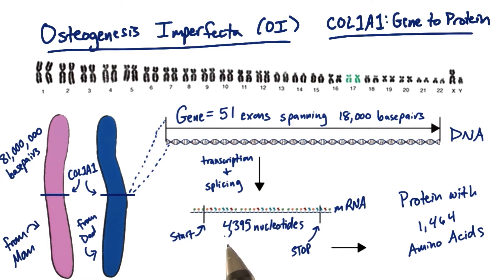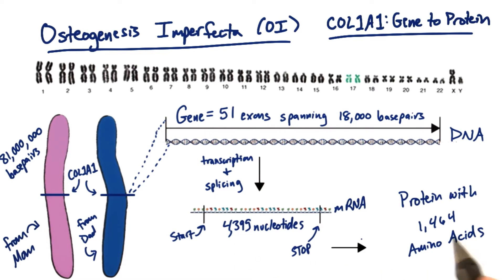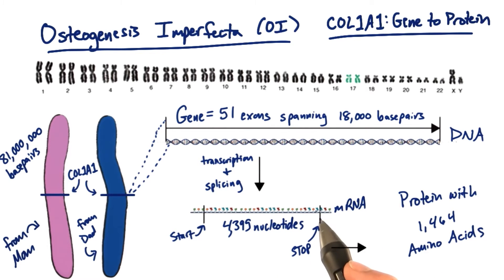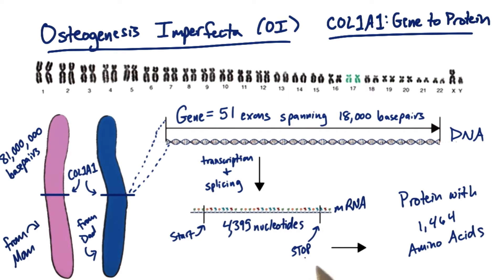Remember, we just divided 4,395 by 3 and subtracted 1, because this last codon doesn't code for an amino acid — the stop codon is just empty.